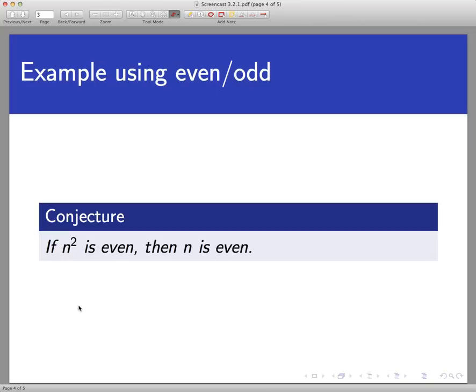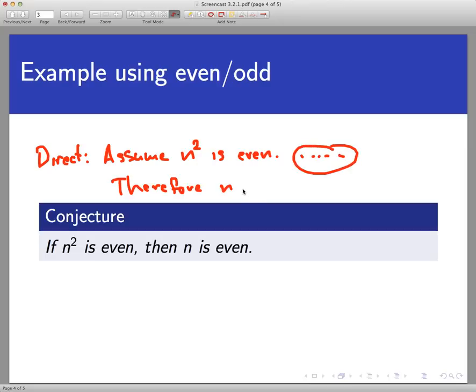Now in a direct proof of this statement, if I wanted to prove this directly, the first line would be to assume n squared is even. So I would assume that n squared is even. And a lot would take place perhaps in the proof. And the very last line would say therefore n is even. Now just think about what would go in the middle.